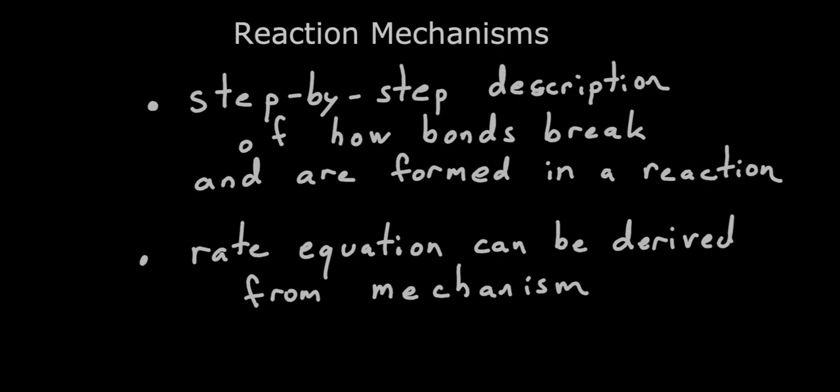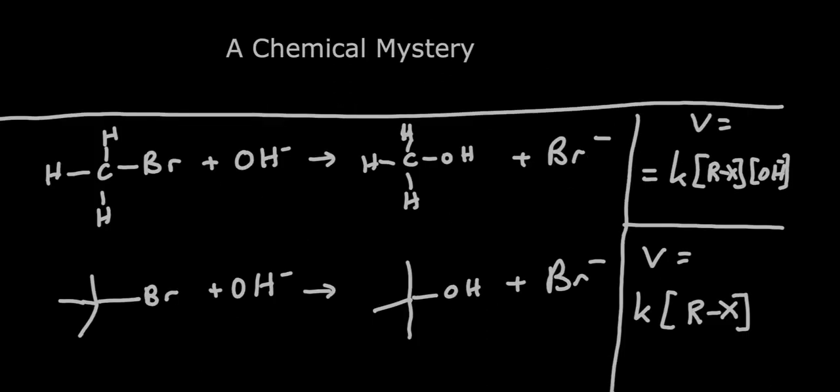Rather than talk about this at a theoretical level, let's look at concrete examples. Let's contrast two reactions that use two different mechanisms, and as a consequence, we're going to see how we can get their rate equations. We're doing this in the context of a chemical mystery, which is why these two reactions have different rate equations.